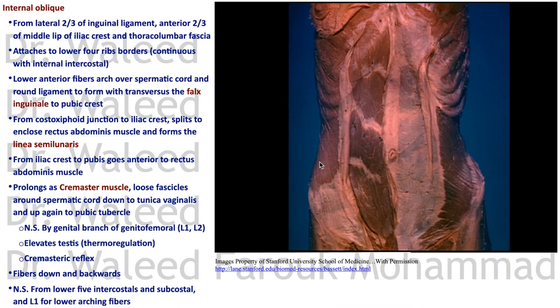The external oblique is supplied by the lower intercostals and subcostal nerve. Deep to it is the internal oblique, which takes origin from the lateral two-thirds of the inguinal ligament, the anterior two-thirds of the middle lip of the iliac crest, and posteriorly from the thoracolumbar fascia.